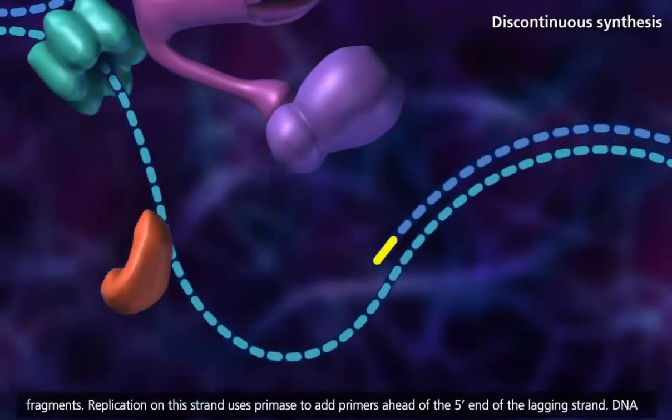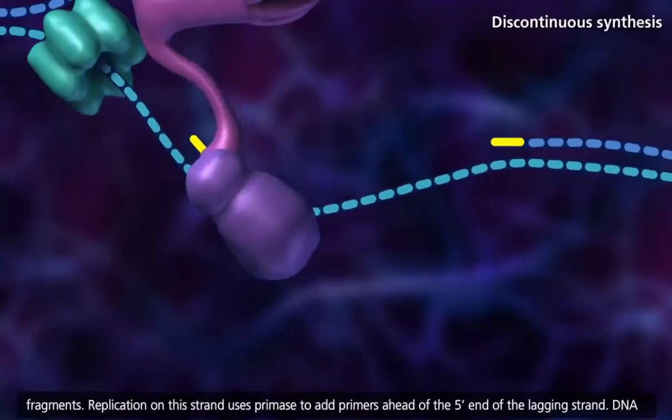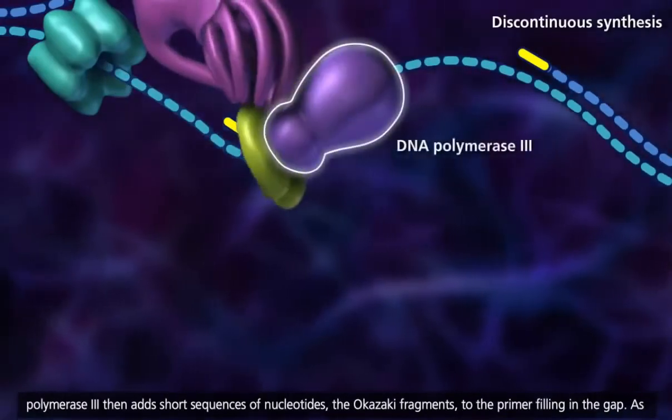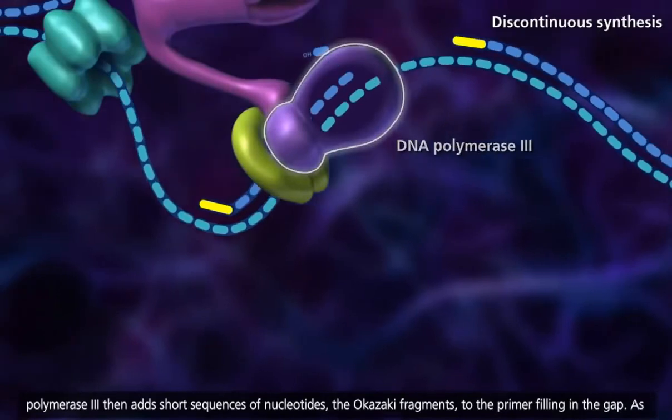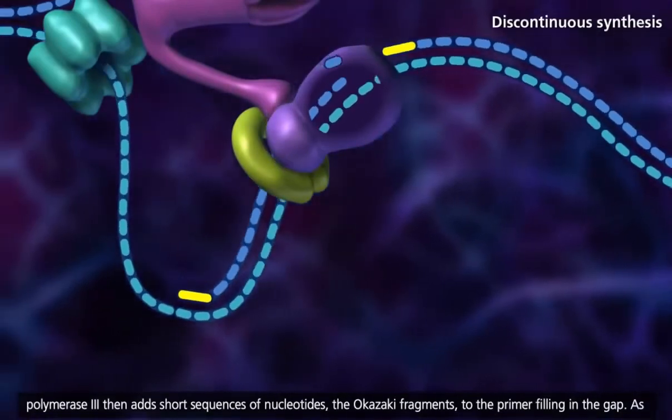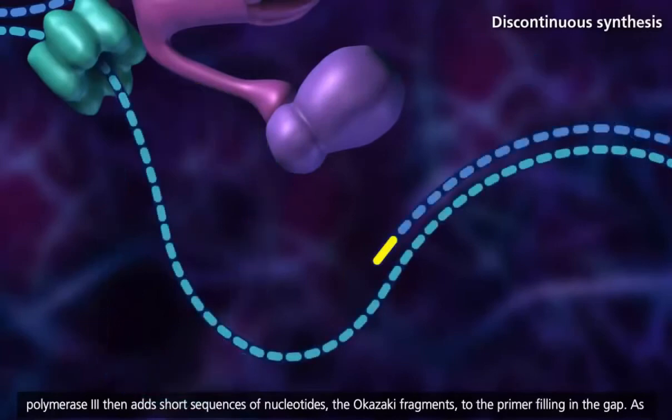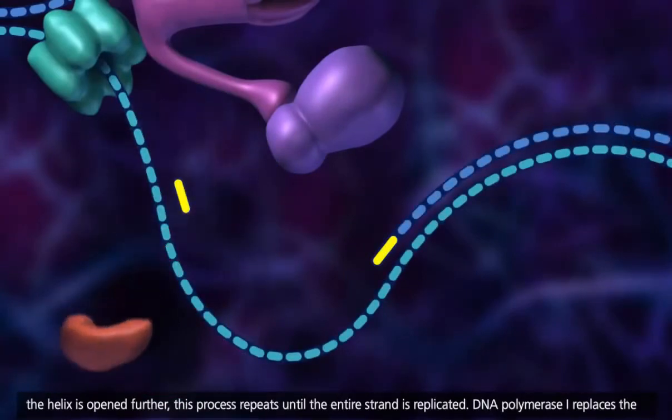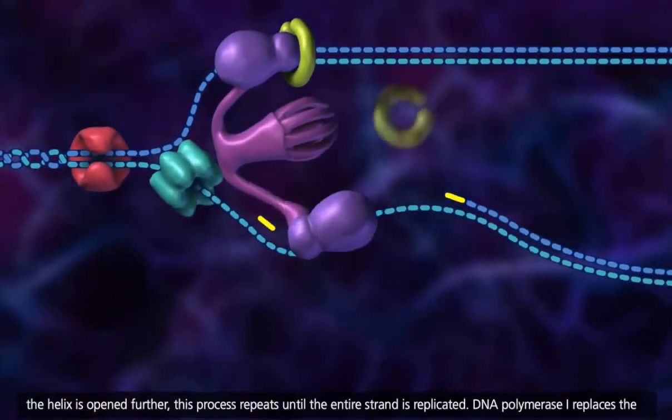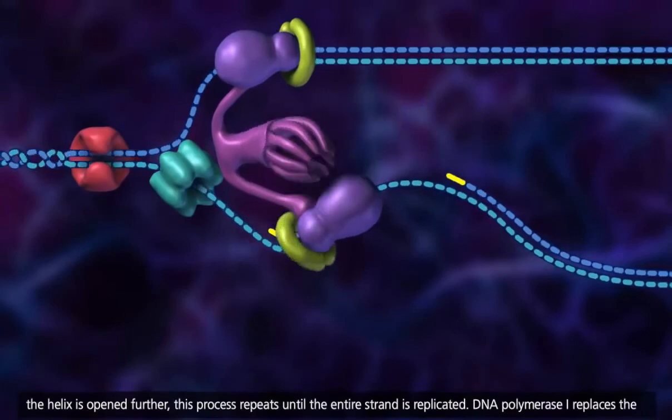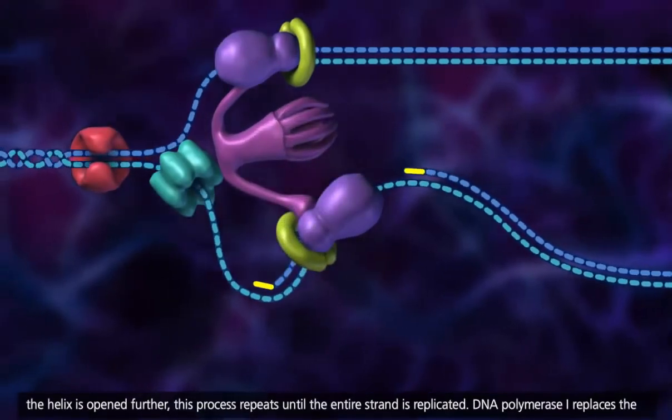Replication on this strand uses primase to add primers ahead of the 5' end of the lagging strand. DNA polymerase 3 then adds short sequences of nucleotides, the Okazaki fragments, to the primer filling in the gap. As the helix is opened further, this process repeats until the entire strand is replicated.